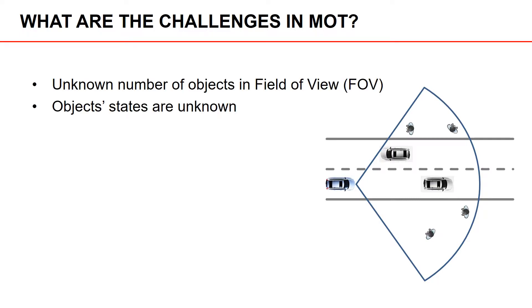To begin with, we have an unknown number of objects in the field of view. In this particular example we have four pedestrians in the field of view, two on each side of the road, and there are also two cars. In addition to not knowing the number of objects, we also don't know the states of the objects — so where they are located and where they are going. MOT is often restricted to tracking the objects that are inside the field of view of the sensors.